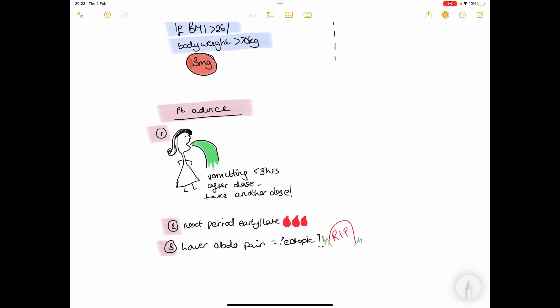Some advice to give the patient when they start oral emergency contraception: if it makes them vomit and they've vomited within three hours of taking the dose, they must take another dose to make sure it's effective.